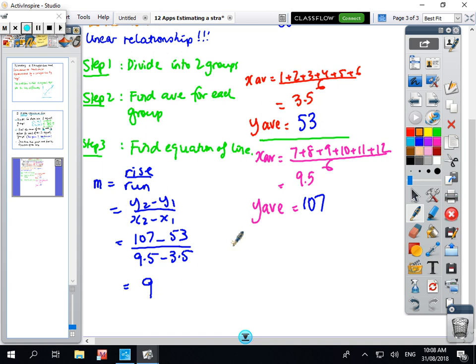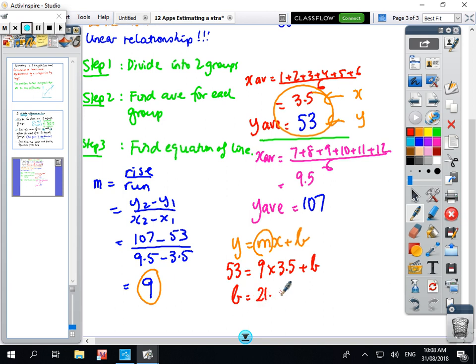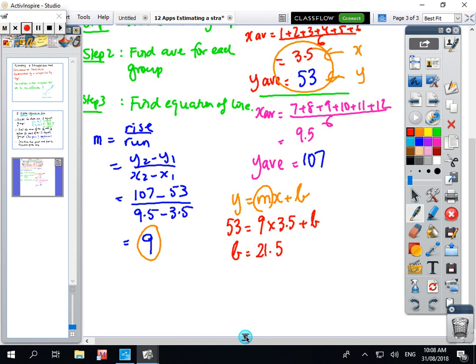Okay, so what we're going to do now is find the value of b, so we've got y equals mx plus b. We're going to use that as your coordinate, that's going to be your x, that's going to be your y, we know the m is 9 and we're just going to find the b value. So 53 equals m times x plus b and if you put that on your calculator you should get something around 21.5 or close enough.